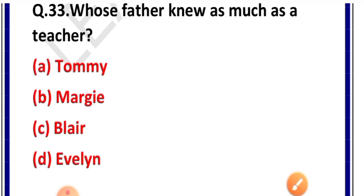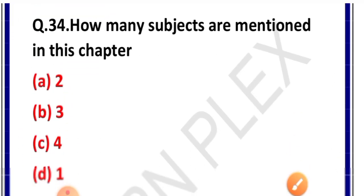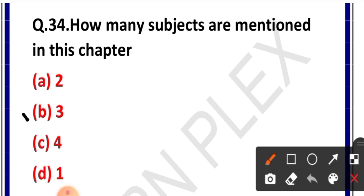Question number 34: How many subjects are mentioned in this chapter? Options: two, three, four, one. Correct answer is option B — three subjects are mentioned.